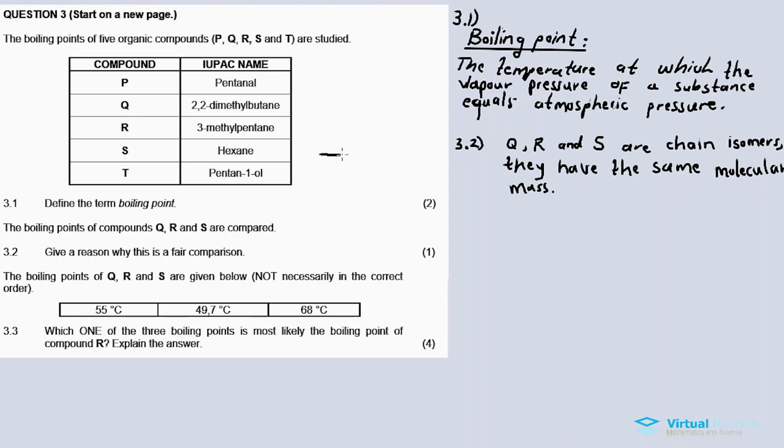So hexane basically is sort of like a long chain. If I were to draw a rough sketch of hexane, the compound will be a straight chain. And then for R, it's still a chain but with one branch. And then this one, Q, is a chain with two branches. I'm just drawing rough sketches of the molecules.